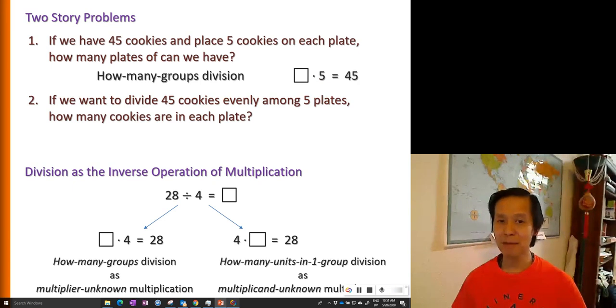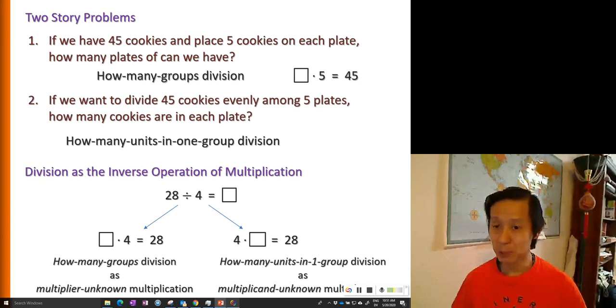Now the second problem is how many units in one group type of division. So in this case, we know the multiplier that there are five plates and we are interested to find how many units in each group or how many cookies in each plate. So here it is five times the missing factor equals 45.